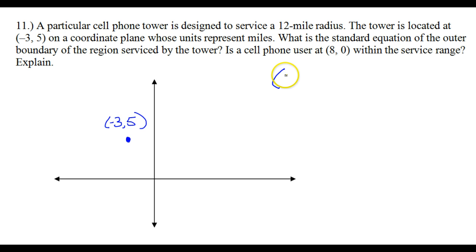In standard form, the equation goes like this. I'm going to put x plus 3, because of that negative 3, I'm doing the opposite sign. And then I'm going to go y minus 5, again doing the opposite sign.